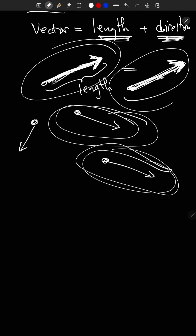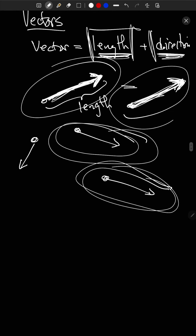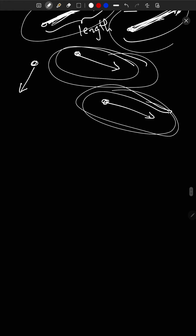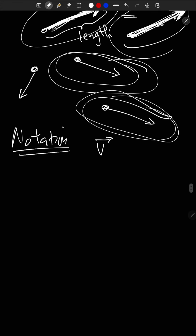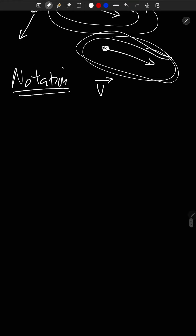We're going to be exploiting this quite a bit, even today, to help us understand the arithmetic of vectors and also to define algebraic computations with vectors. So again, most importantly, only length and direction. I can move a vector around wherever I like — as long as I don't change its length and direction, it's the same vector. Notation: V with an arrow on top. We try to restrict ourselves to lowercase letters — V, U, W — and we always put the little arrow on top to indicate that the quantity is a vector as opposed to a scalar, meaning a number.